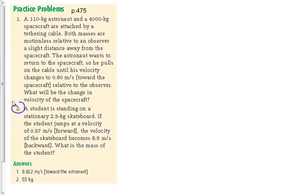Remember we had the car and the truck, and we had to find the mass of the truck? Kind of similar, a little bit different too. This is like an explosion — one object, the guy or girl on the skateboard, as one object. Then when the person jumps off the skateboard, the person goes one way and the skateboard goes the other way — one object becomes two.